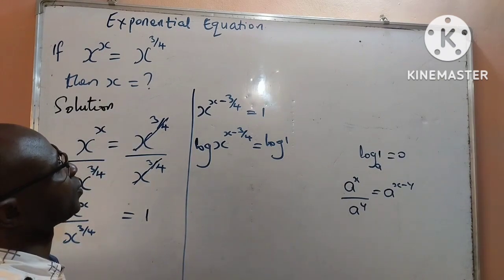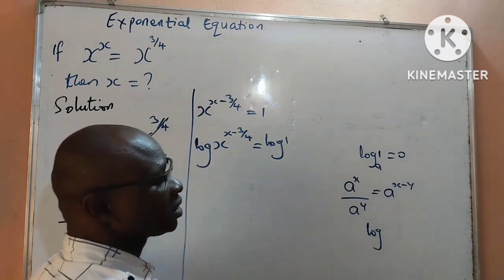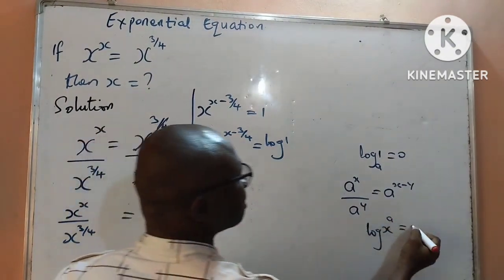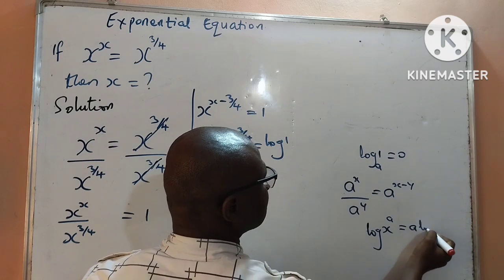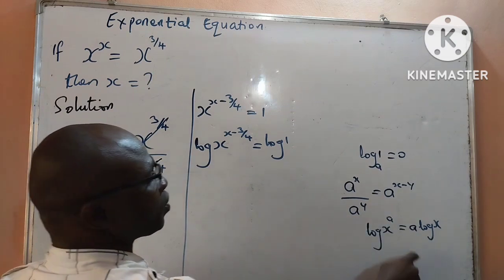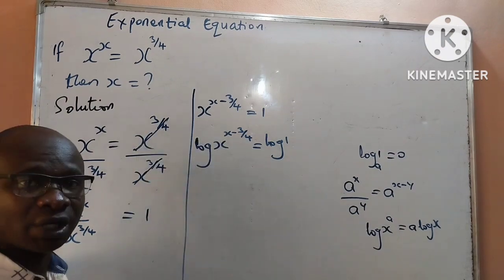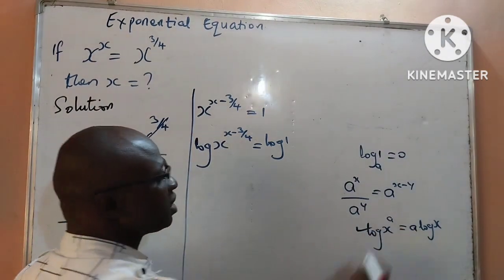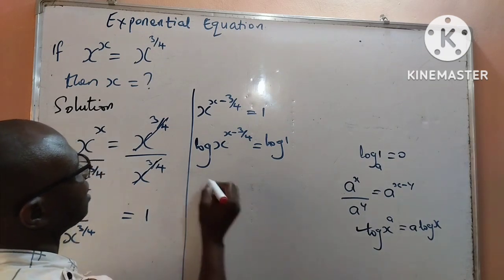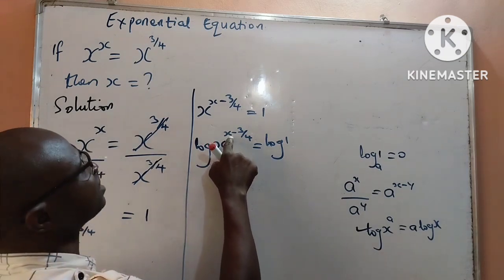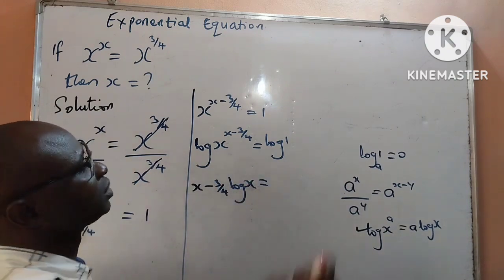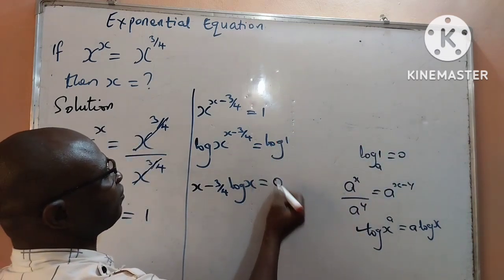We also have that when we get a log of x to the power of a, it is equal to the exponent multiplying the log — that is, a times log of x. I am going to apply this to the left hand side, so the exponent x minus 3 over 4 comes down, giving me: x minus 3 over 4, times log x, equal to 0. Since log of 1 to any base is 0, the right hand side gives us 0.